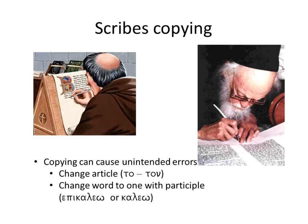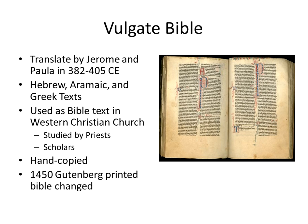It's a wonder to me that all of our scriptures come to us. Now, many of the Greek texts were not copied any longer, because Jerome and Paula did a translation around 382 to 405 CE. They took the original Hebrew, Aramaic, and Greek text, and this text — the Vulgate Latin text — was used as the Bible text in the Latin church. It was studied by priests, studied by scholars, hand copied, and in 1450 the Gutenberg printing press changed the way these Bibles were created.